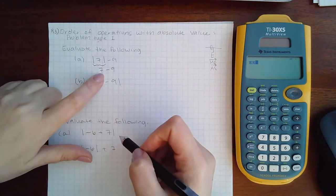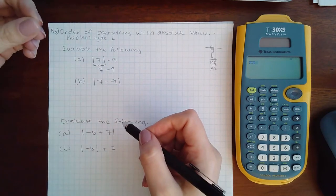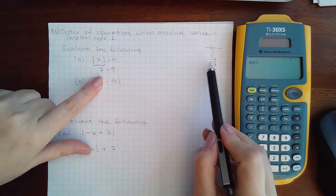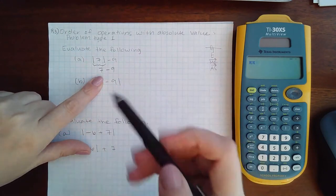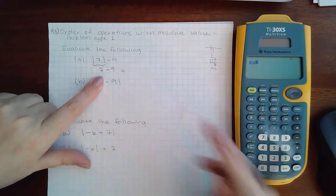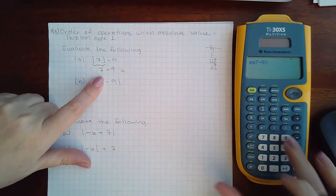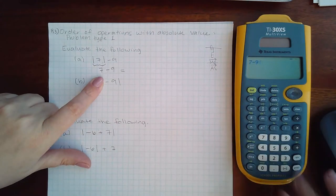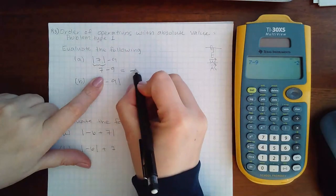Then there is no multiplying or dividing to do here, but the last thing I have to do is subtract. Seven take away nine is... oops, I don't know what was in my calculator. Seven take away nine is negative two.